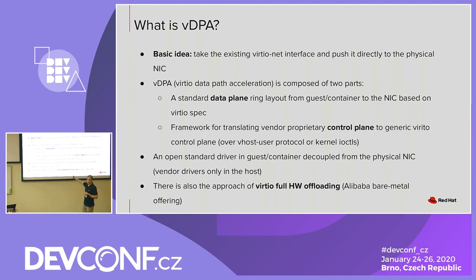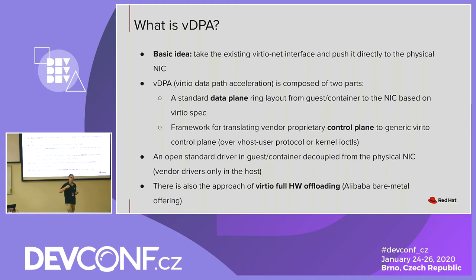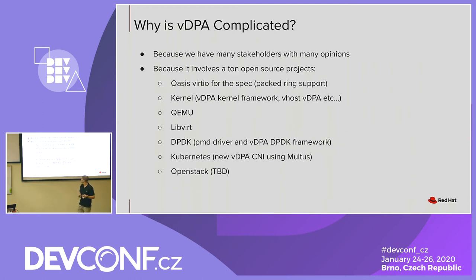There is another way to do this called virtual hardware offloading, which is actually in production at Alibaba — where both the control plane and data plane are implemented on the physical NIC. We tried this for a KubeCon demo in October. It's much more challenging because the control plane changes much more rapidly than the data plane.